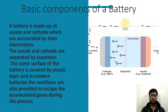Now let us talk about the basic components of a battery. A battery is made up of an anode and cathode which are surrounded by electrolytes. The anode and cathode are separated by a separator. The outer surface of the battery is covered by a plastic layer, and in modern batteries ventilators are also provided to allow accumulated gases to escape during the process.